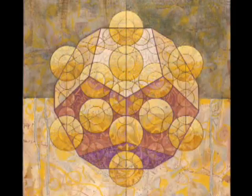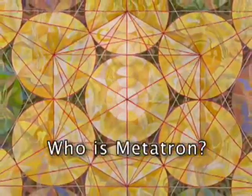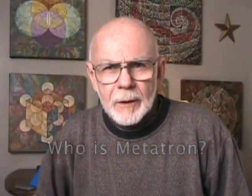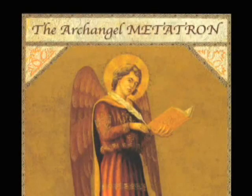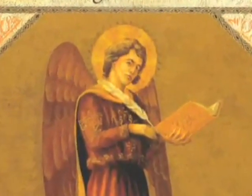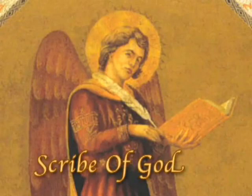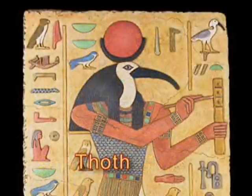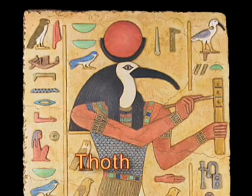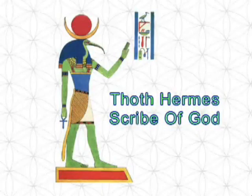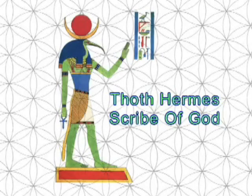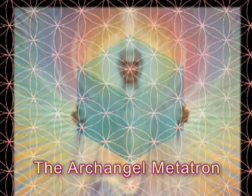So the first question is: who is Metatron? Where did he come from? If you investigate, you find that Metatron was an archangel mentioned in Islamic, Judaic, and Christian mythologies. In medieval mythologies he was considered to be the scribe of God, making him equivalent to the ancient Egyptian scribe of the gods known as Thoth Hermes. According to legend, a scribe of God would understand the root principles of creation, which are almost always associated with sacred geometry. In fact, the archangel Metatron is many times pictured holding a cube.